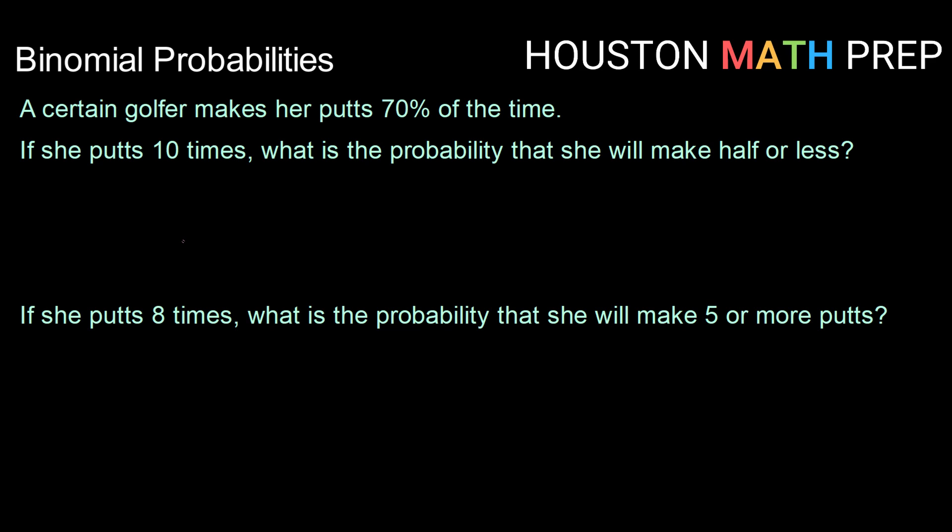We know that this is a binomial experiment because we have a fixed number of trials, each of which is independent. She's going to putt 10 times and each putt is independent of the previous. We have only success or failure—she either makes it or she doesn't. Her probability of success for each individual putt is the same, 0.7. And we are counting the number of successes, the number of times that she makes her putts.